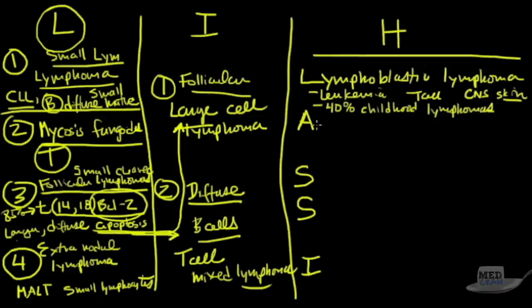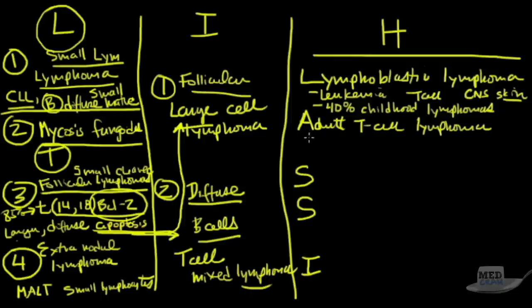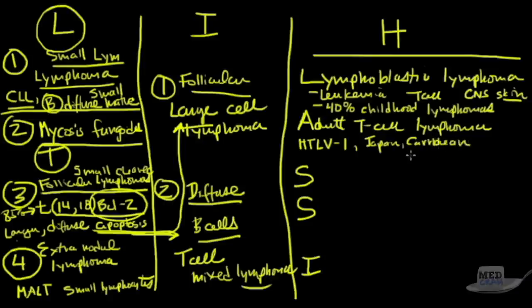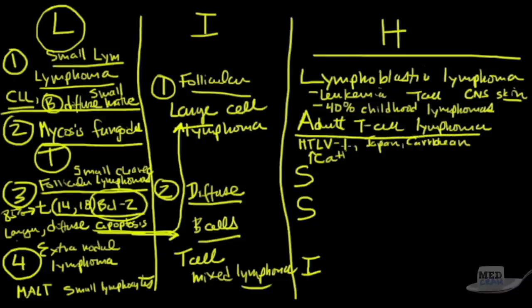A stands for adult T cell lymphoma, or adult T cell leukemia. There is a virus associated with this one called HTLV1. You should probably remember that. It's more common in Japan and the Caribbean. You see hypercalcemia in this one. If they give you a patient with aggressive lymphoma who has high calcium or is Japanese or from the Caribbean, think adult T cell lymphoma associated with HTLV1.